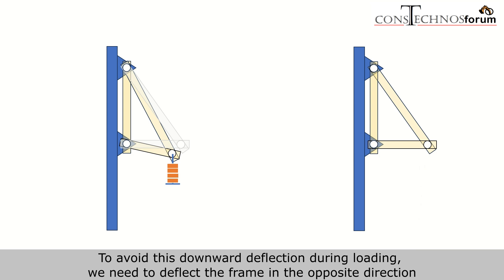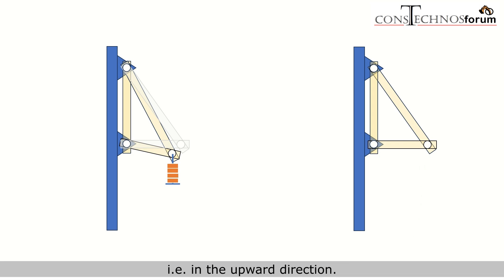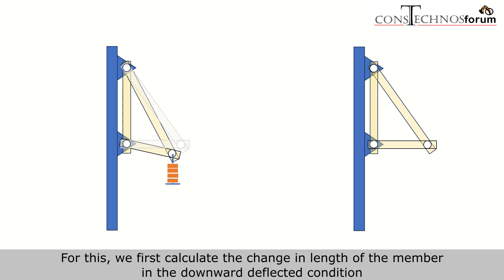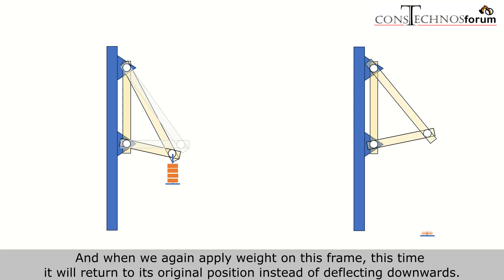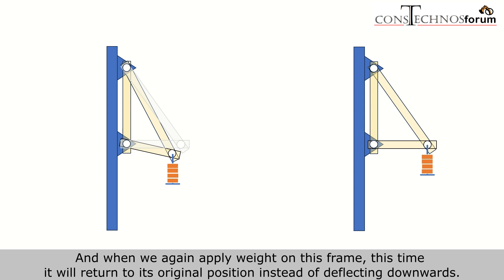To avoid this downward deflection during loading, we need to deflect the frame in the opposite direction, that is in the upward direction. For this, we first calculate the change in length of the member in the downward deflected condition and provide it to the member during fabrication in the opposite direction. When we again apply weight on this frame, it will return to its original position instead of deflecting downward.